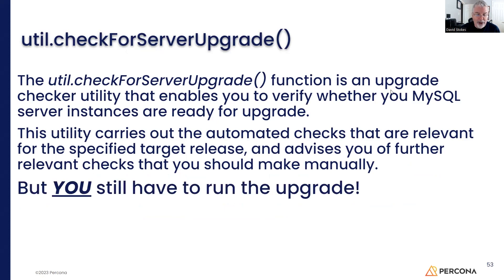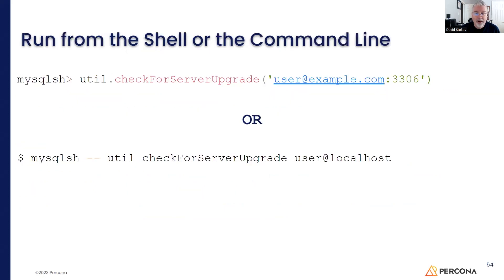Remember, you still have to run the upgrade — this does not do the upgrade for you. If you're running it from the MySQL shell itself, use util.checkForServerUpgrade and provide your login information. We're pointing here to the default port of 3306. If you want to run it from a bash shell, the command you're going to use is mysqlsh --util checkForServerUpgrade and then your login information.